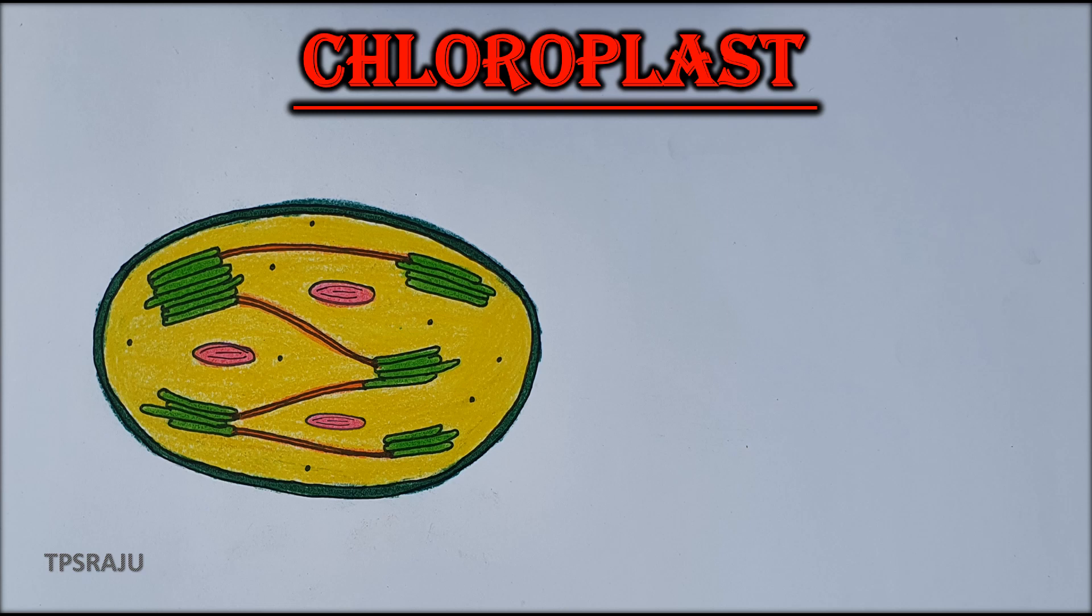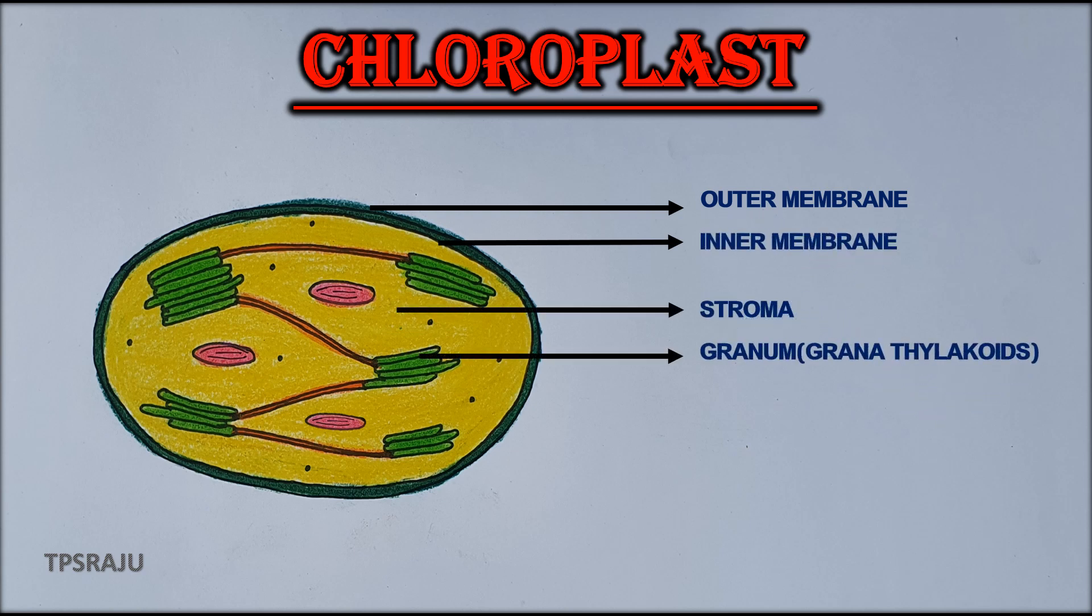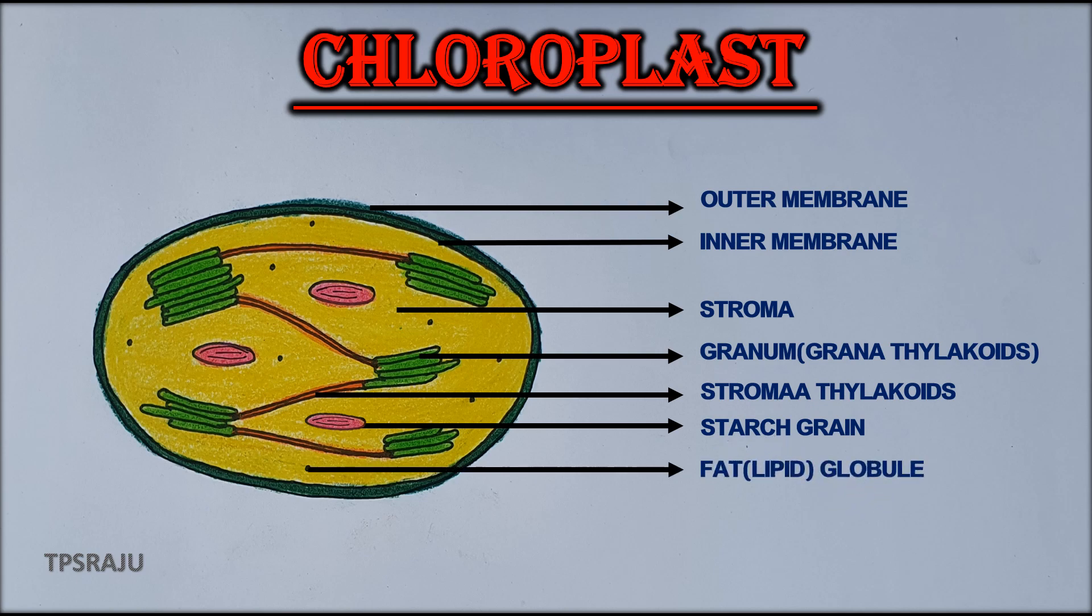Finally, shall we label the parts. Outer membrane, inner membrane, stroma, granum, stroma thylakoids, starch grain, fat globule.